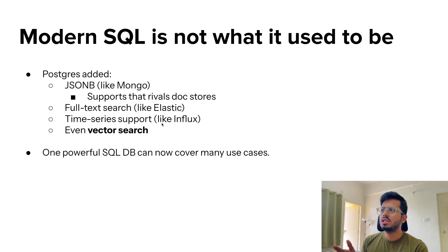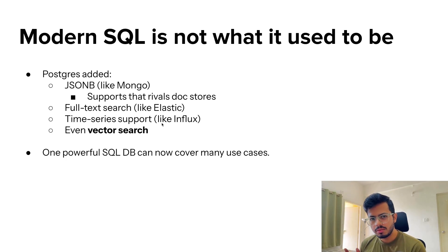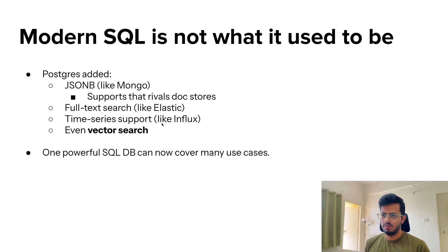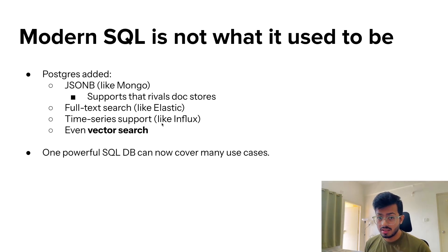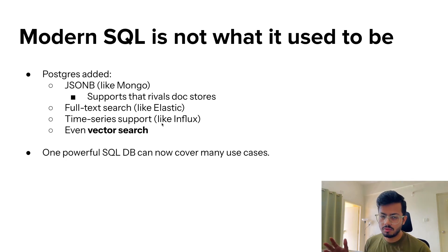Modern SQL is not what it used to be. Postgres now has many capabilities similar to NoSQL. JSONB support is similar to MongoDB's document store. Full-text search is provided, similar to Elasticsearch. Time series support is available, similar to InfluxDB. It even supports vector search. So one powerful SQL database can now cover many use cases — which raises the question: are SQL databases back on track?